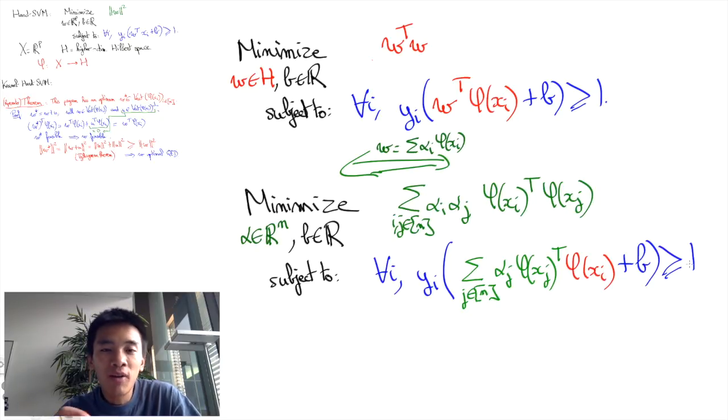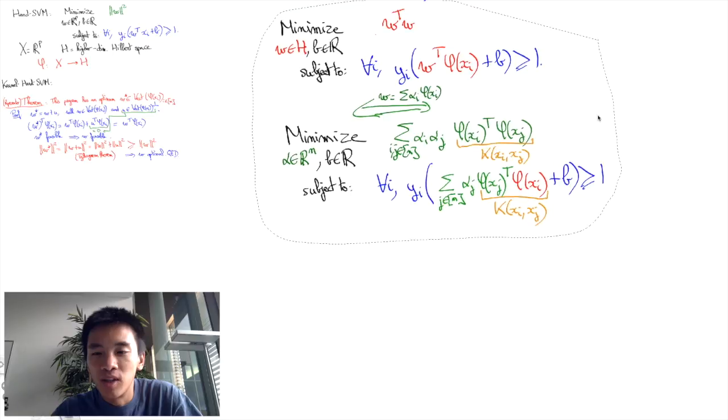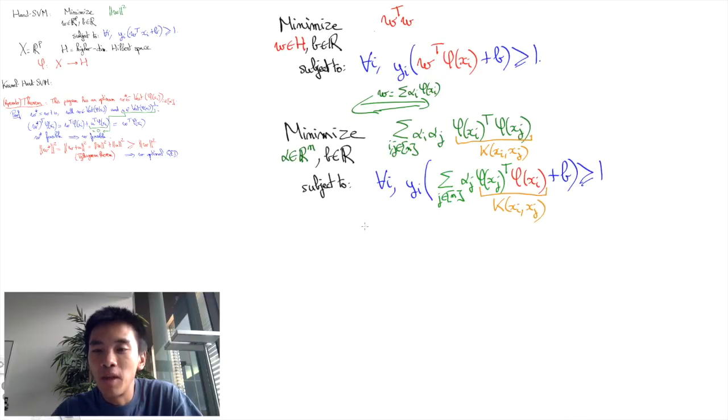And crucially all that's left are the computations of the kernels phi of XI transpose phi of XJ, which is equal to K of XI XJ, and we also wrote it as G IJ in terms of the matrix G which is defined by this equality.